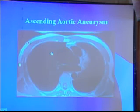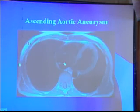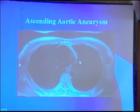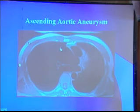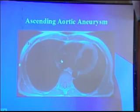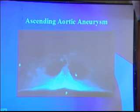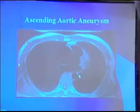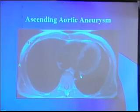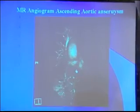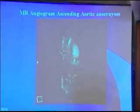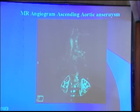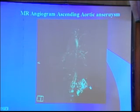Typical ascending aortic aneurysm — massive, almost two and a half times the pulmonary artery. Very, very thin wall. Dilated. No significant atherosclerotic disease. And the MR angiogram showing a nice dilated aorta with no other abnormality.